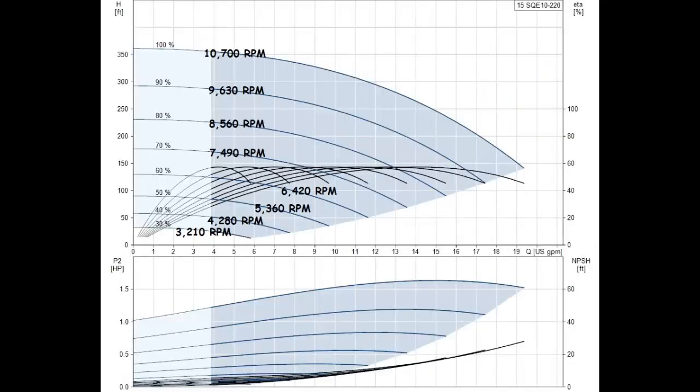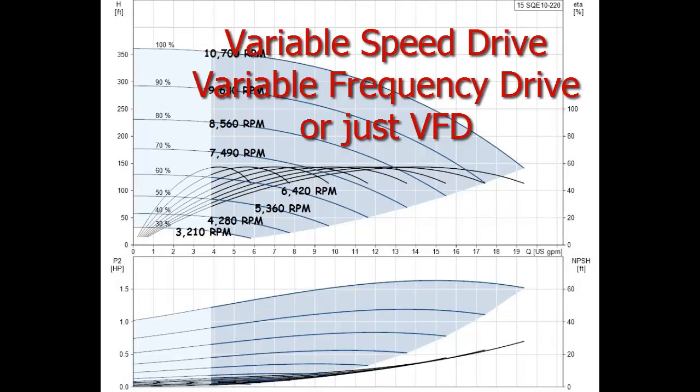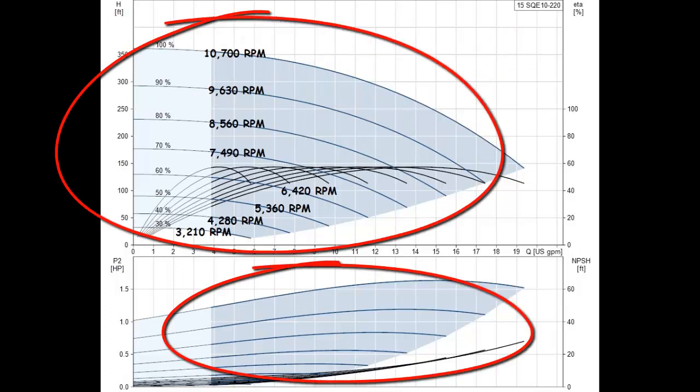Now let's look at a variable speed pump curve for the same application. Also known as variable speed drives, variable frequency drives or just VFDs, the area shaded in blue is the supposed working area for this pump at varying speeds.